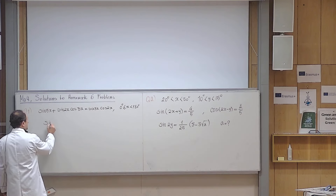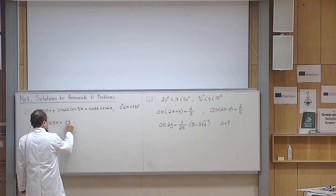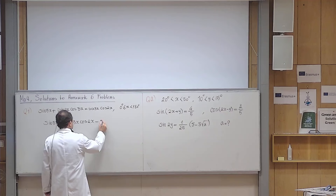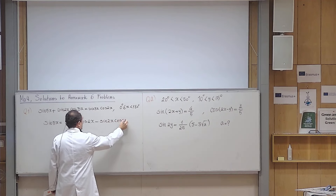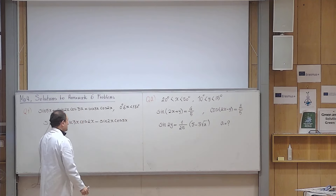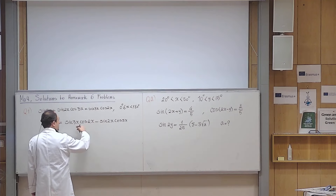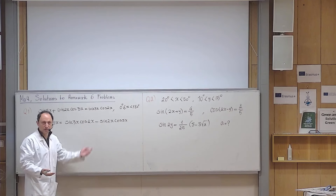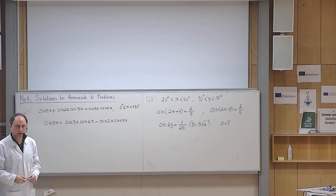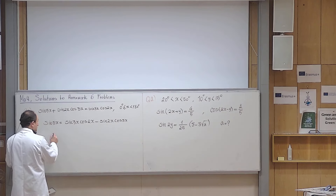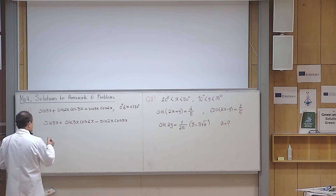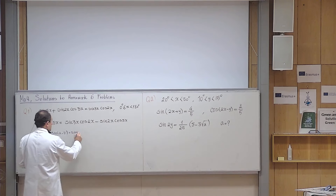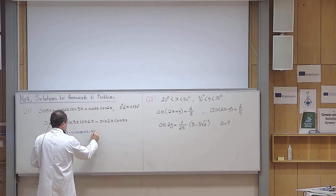So I keep sine 5x on the left, and I move sine 2x cosine 3x to the other side. I don't expect you to have this exactly in your memory, but I hope you understand this is the subtraction formula — either for sine or for cosine. You put the formulas and you realize that this is the subtraction formula for sine.